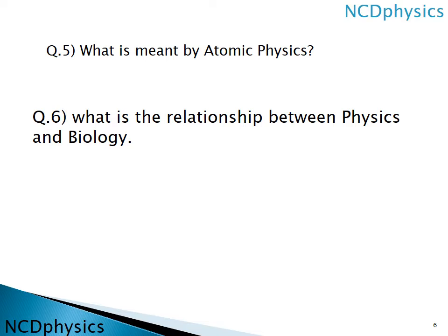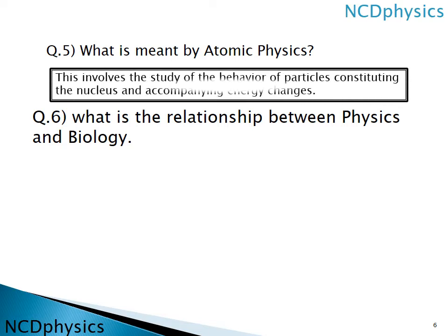Question number five: what is meant by atomic physics? Atomic physics is the branch of physics that involves the study of the behavior of particles — atoms, protons, electrons, alpha and beta particles, and so on. We study about small particles and the changes in their relationships.